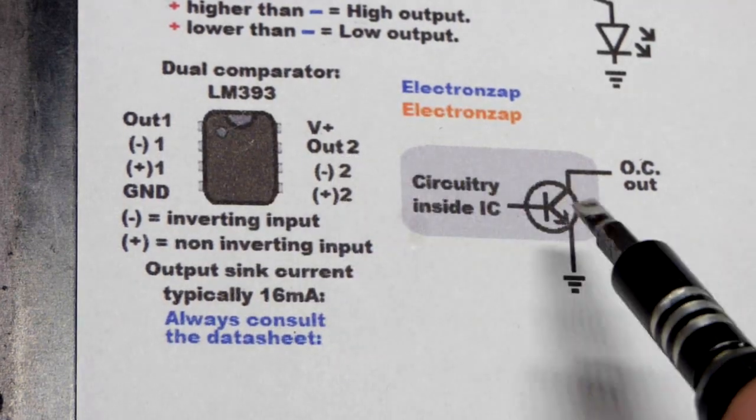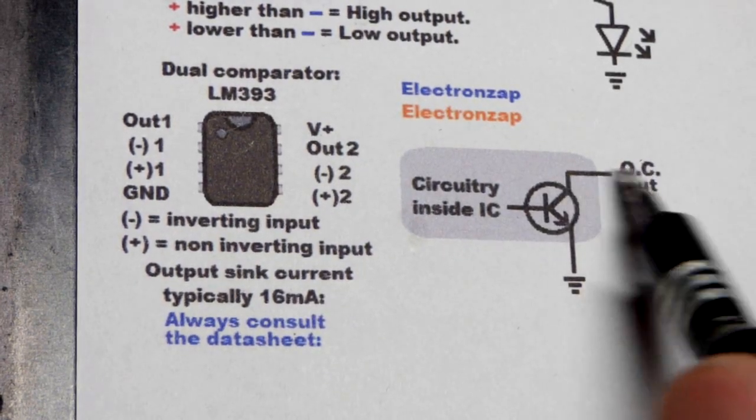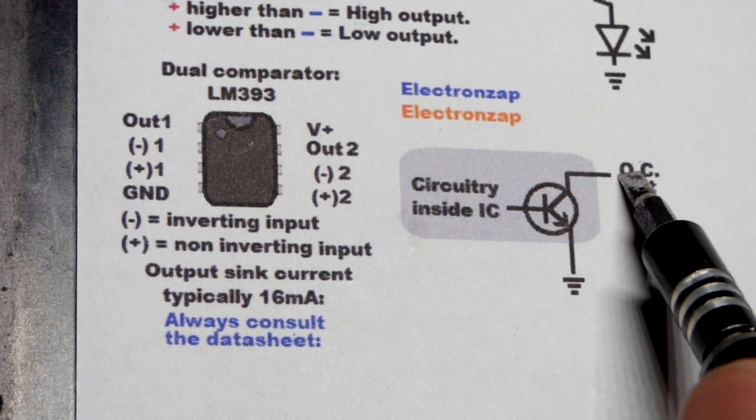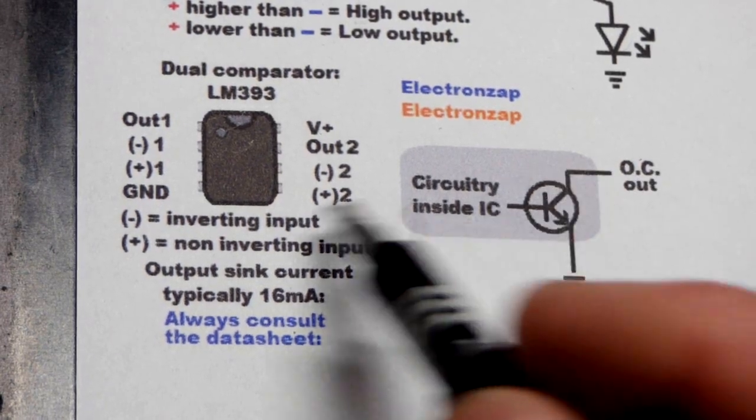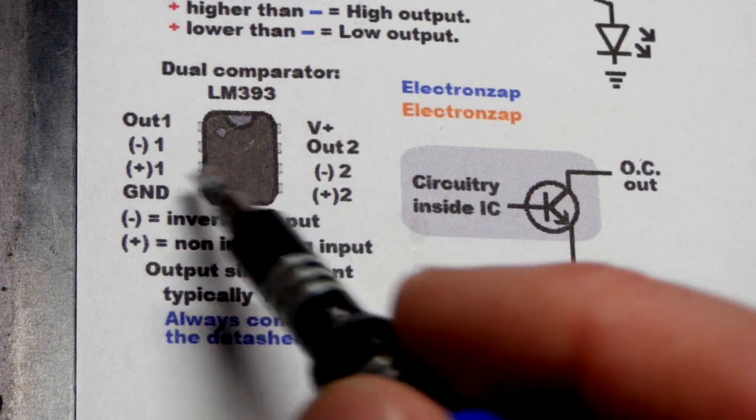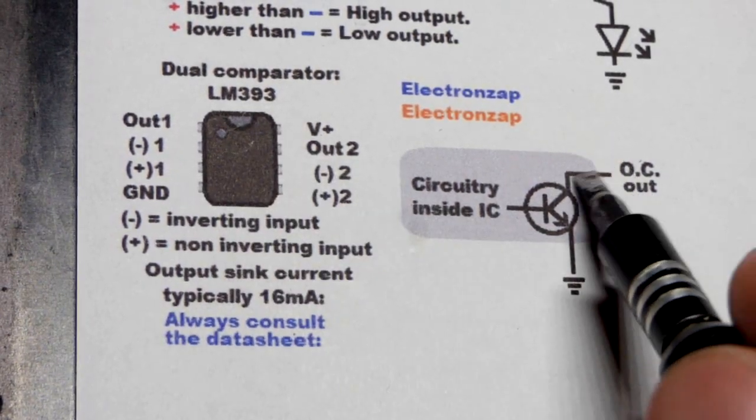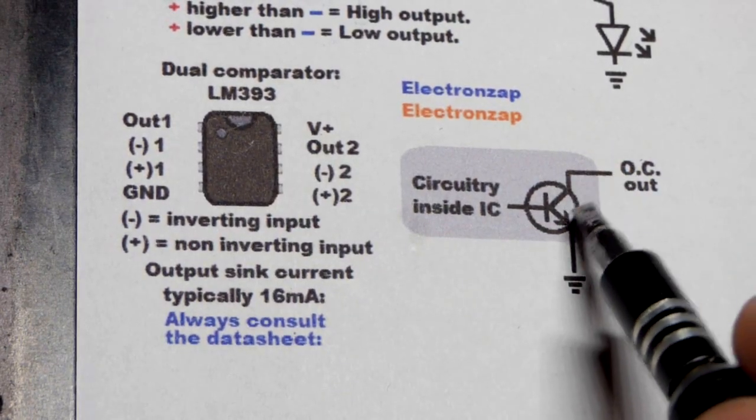Their output is actually an NPN bipolar junction transistor, the collector part of it right there. That's why it's open collector. That's all it connects to is a transistor as far as the circuitry within the comparator here is.